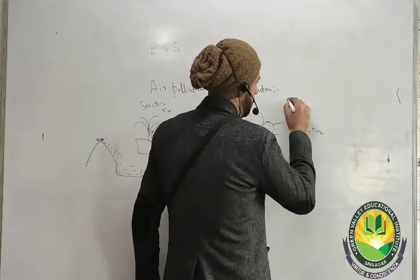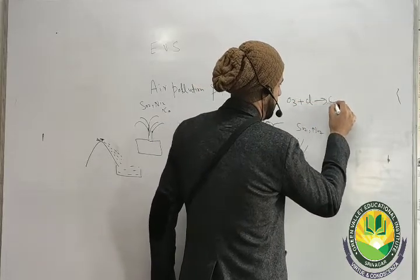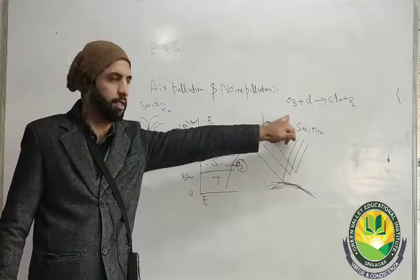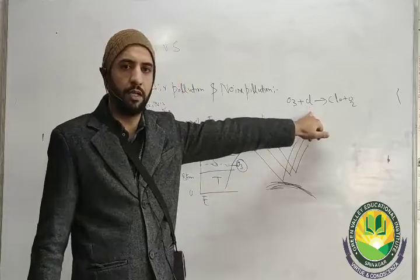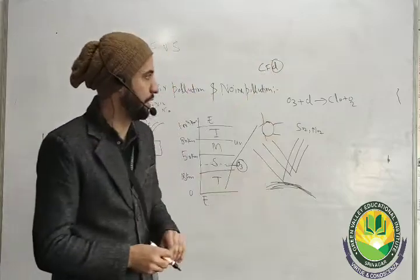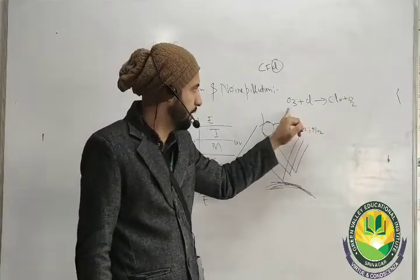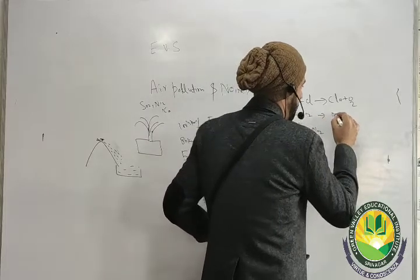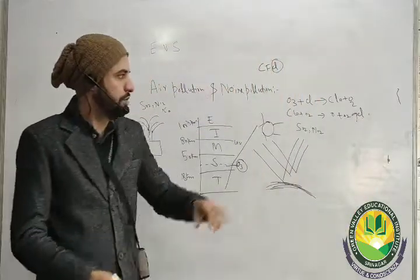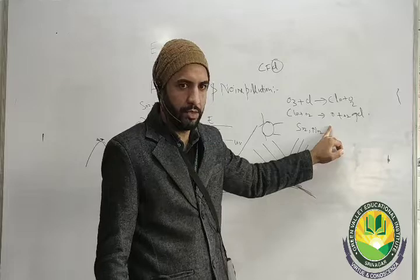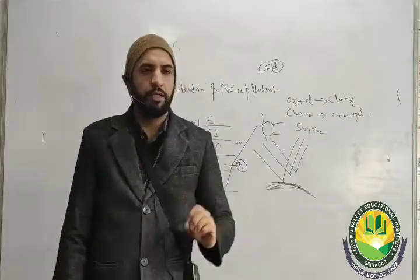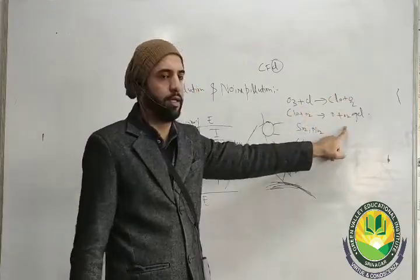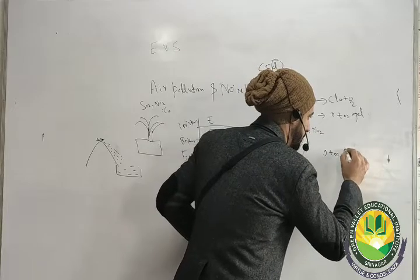The chemical reaction is: O3 plus Cl (from CFCs) gives ClO plus O2. Then ClO plus O gives Cl plus O2, with chlorine acting as a catalyst in the presence of UV radiation. So ozone (O3) is continuously broken down by the chlorine from CFCs, with chlorine acting as a catalyst.